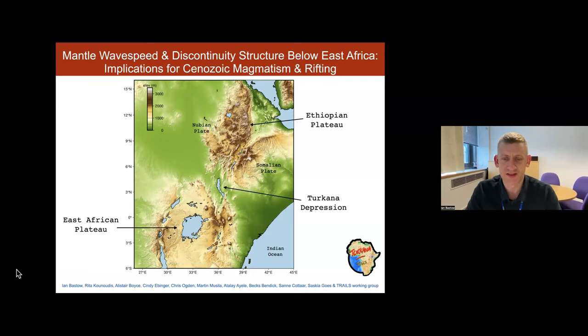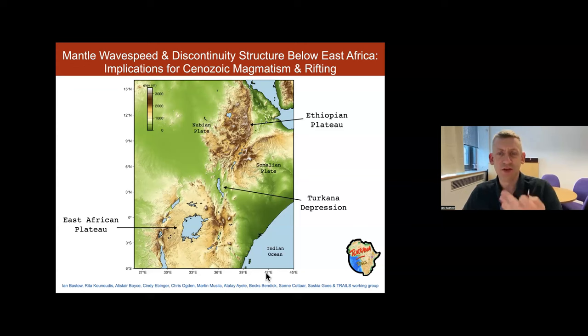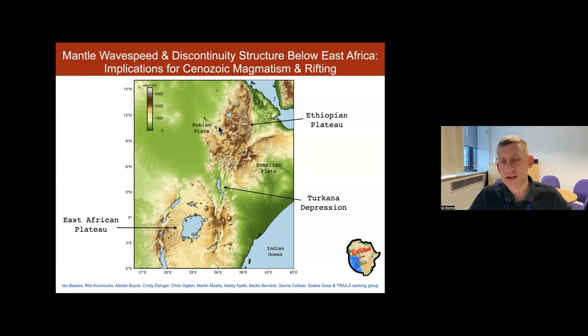So I thought before I hit anyone with a blizzard of seismological tectonic detail that we might start with a simple topographic map. So long before we had any seismic tomographic images, let alone seismograph networks, we knew about these uplifted Ethiopian and East African plateaus, in particular the Ethiopian plateau, which is the home to the world's youngest continental flood basalt province. And the high topography and the magnetism associated with these two zones has long been associated with the presence of one or more mantle plumes.